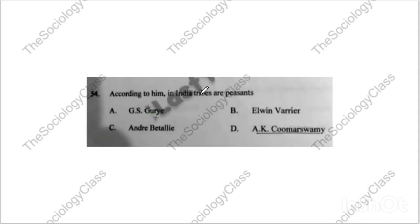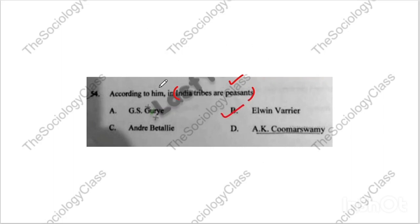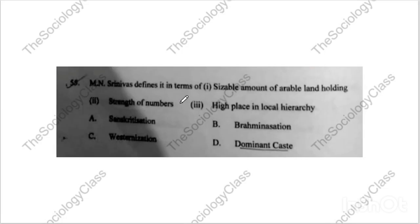Question number fifty-four: 'Who said that Indian tribes are peasants?' Options: G.S. Ghurye, Elwin Verrier, Andre Beteille, or A.K. Coomaraswamy. The correct answer is B — Elwin Verrier. There was a famous debate between Ghurye and Verrier which is well covered in MA Sociology IGNOU material — I will definitely make a video on it.